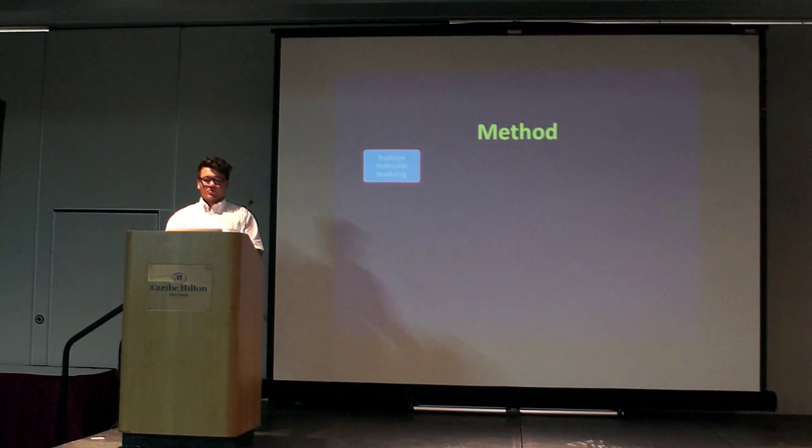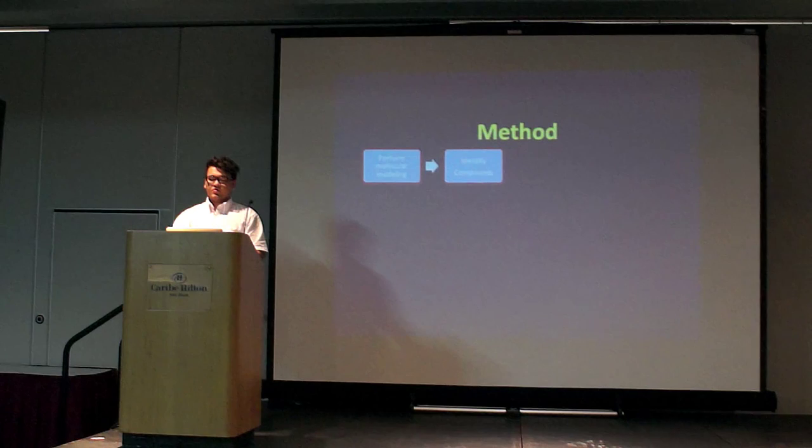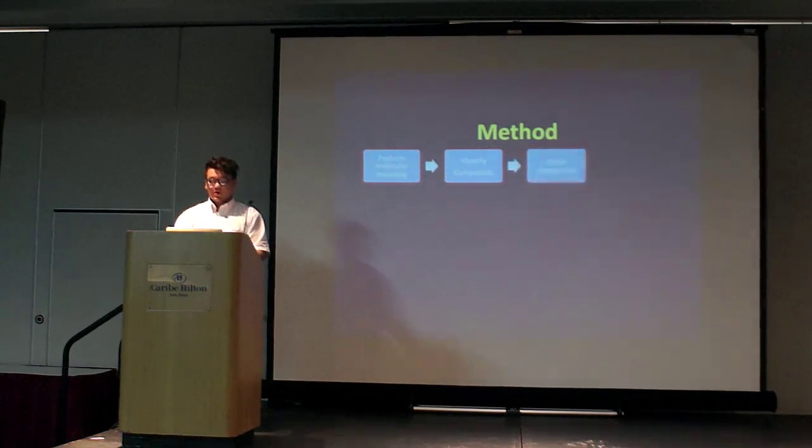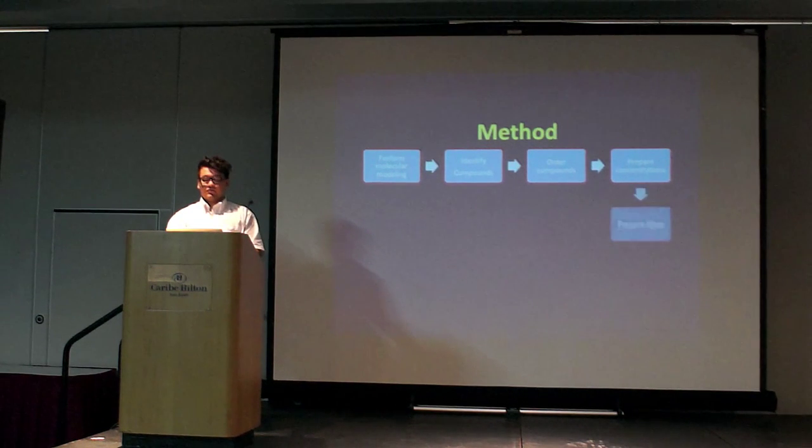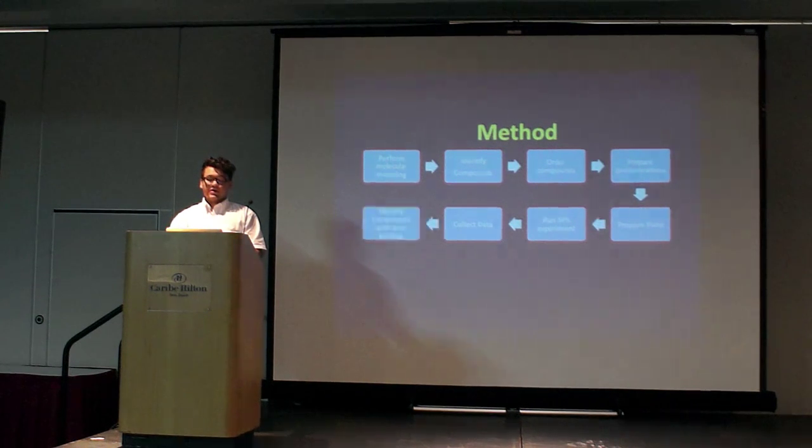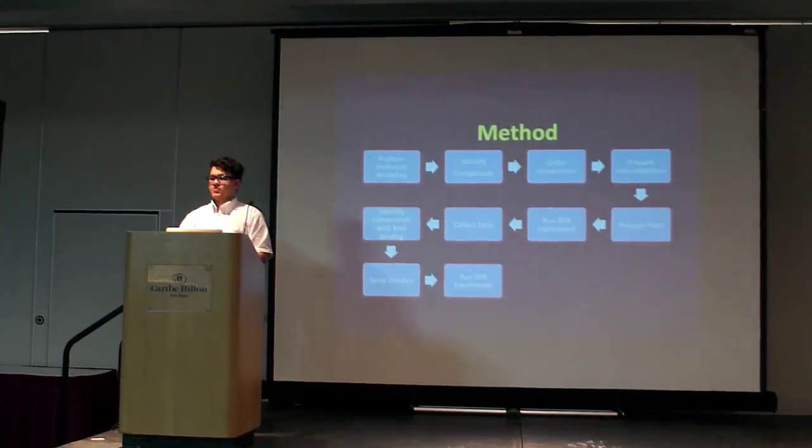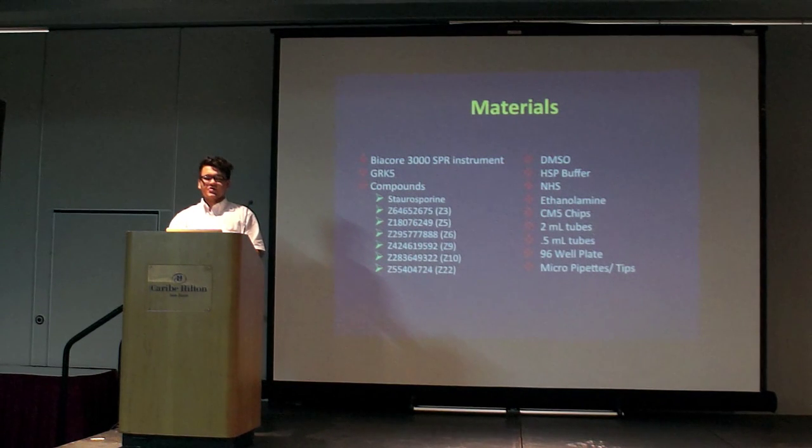The first step in our method was to perform the molecular modeling. We used this to identify the compounds that we were going to experimentally test, and then we ordered these compounds and prepared their concentrations. We prepared a plate and ran the SPR experiment. With this, we collected the data and identified the compounds with the best binding. We performed a serial dilution on them and ran an SPR experiment. Here are a list of my materials. Please take a moment to look over them.